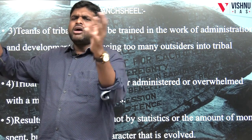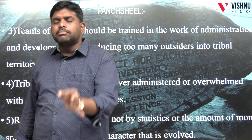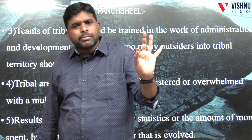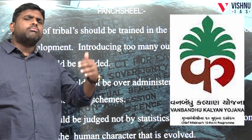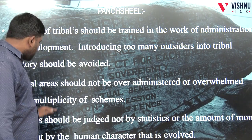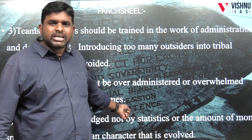The fourth point — we should not give five, ten, or twenty schemes. We should give only one or two schemes which target them, like the Vanabandu Kalyyan scheme, which converges housing, education, health, skill development, loans, and self-help groups into one particular scheme. So instead of confusing them with more schemes, give one scheme and let there be clarity. The fifth point — don't judge by the amount spent; focus on quality not quantity. Government schemes for tribals should be qualitative in nature, not just quantitative.